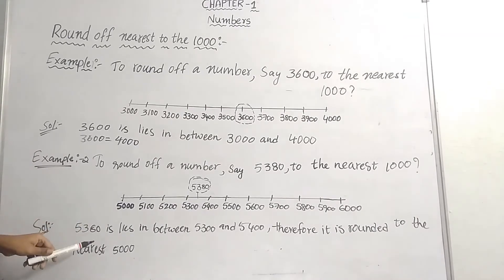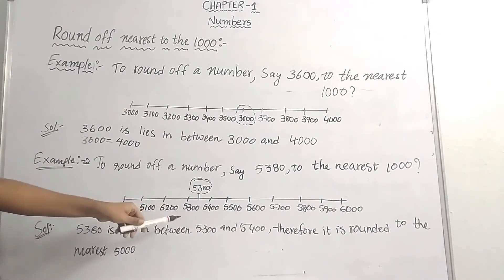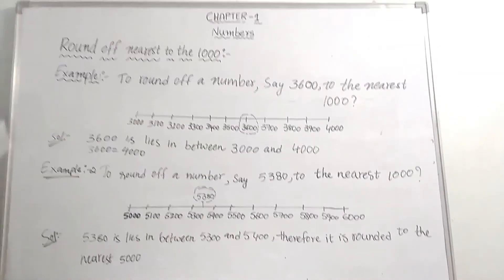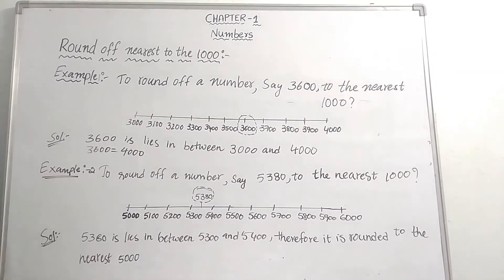5380 is in between 5300 and 5400. It is nearest to 5000. This is rounding to the nearest 1000.